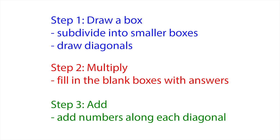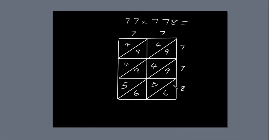Finally, we're going to add up the numbers along the diagonals. The first diagonal only has one number, six. So write six directly below the diagonal.